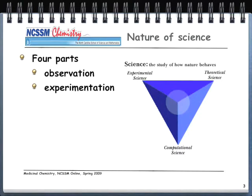When most people think about science, they think about experimental science — people in white coats in chemistry, physics, or biology labs with test tubes and beakers. Experimental science is typically hypothesis-driven: you have a hypothesis and test whether it's false. There's usually an independent variable — the thing you manipulate — and a dependent variable — the thing that changes as a result — along with a control group.